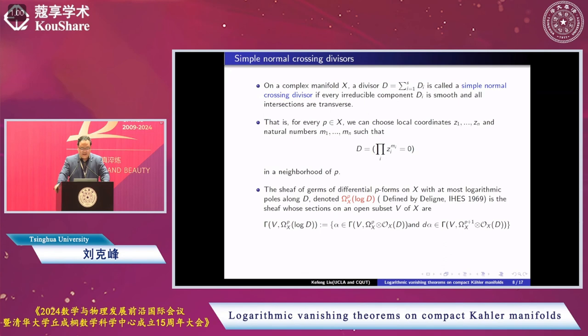On a complex manifold, a divisor D is called a simple normal crossing if every irreducible component D_i in the sum is smooth and all the intersections are transverse.